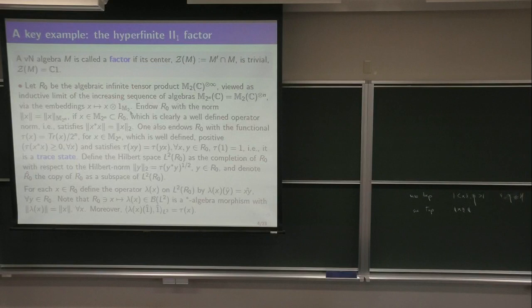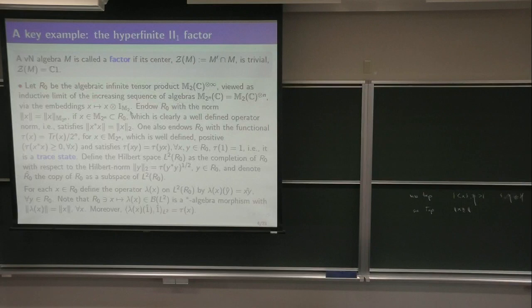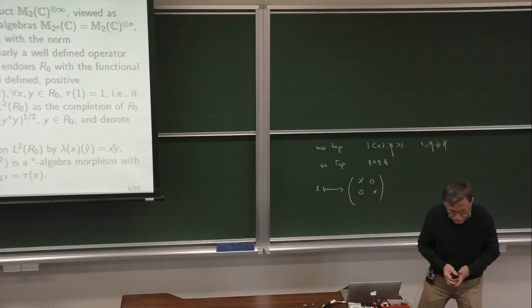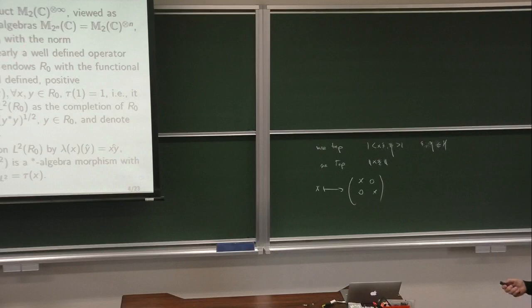We'll take the two-by-two matrix algebra and take the infinite algebraic tensor products — just infinite tensors — where we only take elements that have the identity from a certain point on, so it's finitely supported. You can also view this as an increasing sequence of the 2ⁿ by 2ⁿ algebras, which is just the tensor product only up to n, from one up to n, with these embeddings.